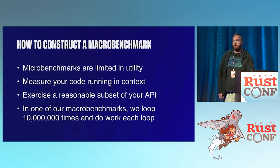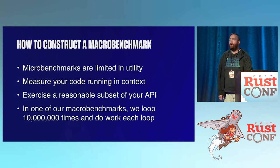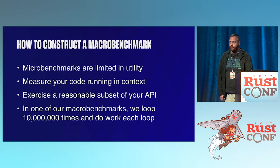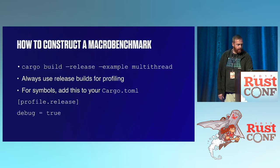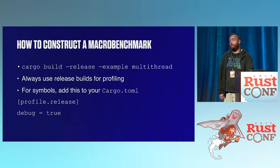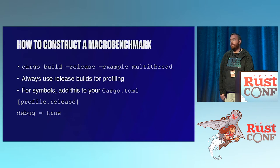While microbenchmarks are really useful and you should write them, macrobenchmarks are another really good use of time. A macrobenchmark uses your API in the same context your users would. Microbenchmarks are limited in that you run something a handful of times so you don't really know how well it's running in the context of your CPU. When constructing a macrobenchmark, remember to compile with release because you want optimizations turned on — it's a mistake to profile unoptimized code. You also need to add debug symbols, just a little config in your Cargo.toml.